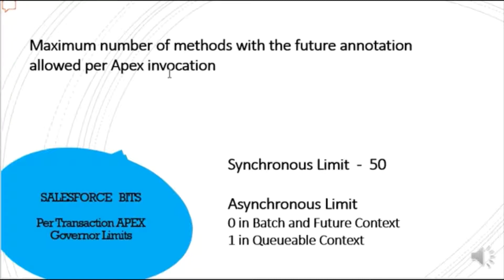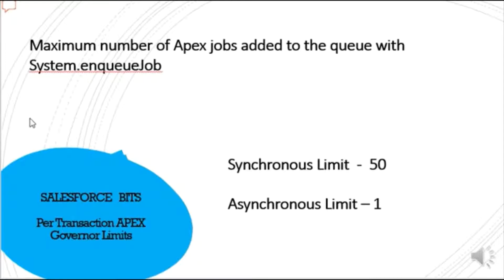Maximum number of methods with the future annotation allowed per Apex invocation: 50 for synchronous and 0 in batch and future contexts, and 1 in a schedulable context. Maximum number of Apex jobs added to the queue with System.enqueueJob is 50 for synchronous and 1 for asynchronous.